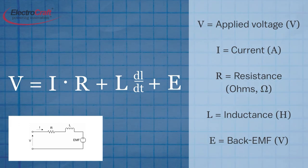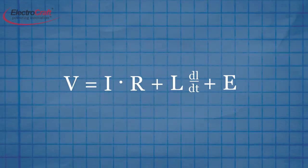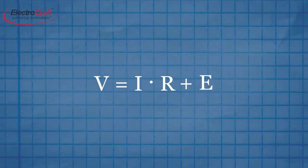We can assume that the current is constant, in which case inductance can be disregarded and the voltage equation can be rewritten as shown here.